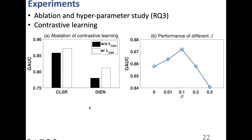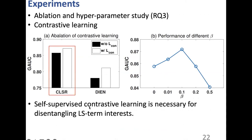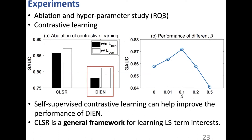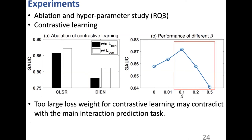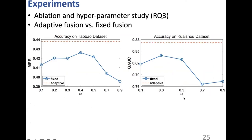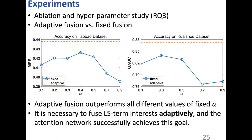For the ablation study, removing the contrastive loss leads to worse performance, confirming that self-supervised contrastive learning is necessary for disentangling long- and short-term interest. Applying the contrastive loss to the existing model DIN also improves performance, showing CLSR is a general framework. Additionally, too large a loss weight for contrastive learning may conflict with the main interaction prediction task, and high performance is obtained with a weight of 0.1. Finally, adaptive fusion outperforms all fixed alpha values, confirming that an attention network successfully achieves adaptive fusion.